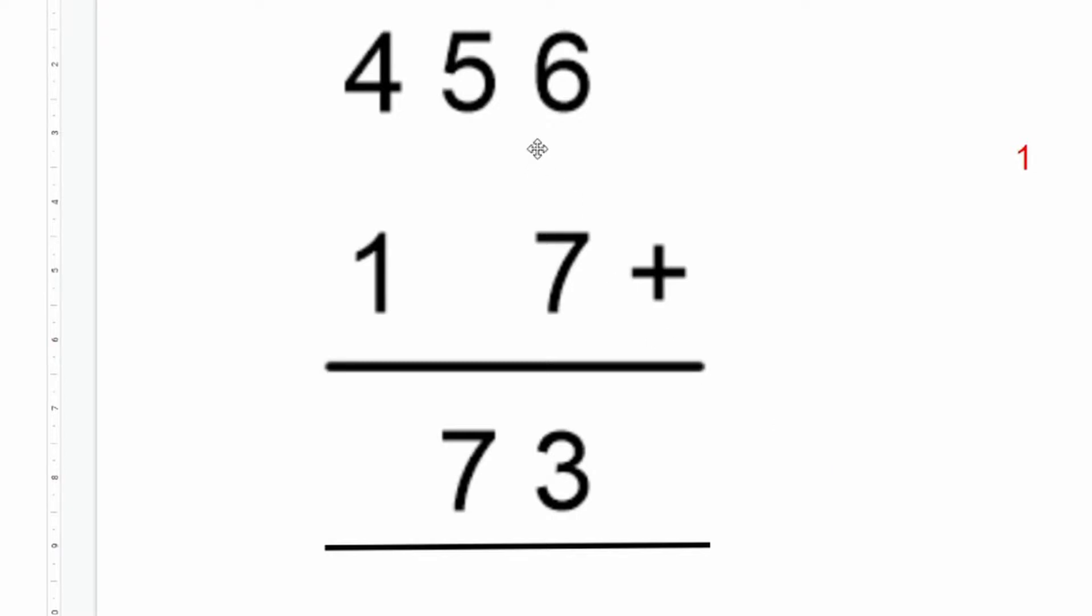The first thing we need to do is start over here at the ones column. Six add seven we know isn't three, and so therefore it must be thirteen. We've got the three already written in, and we have to regroup this one underneath.